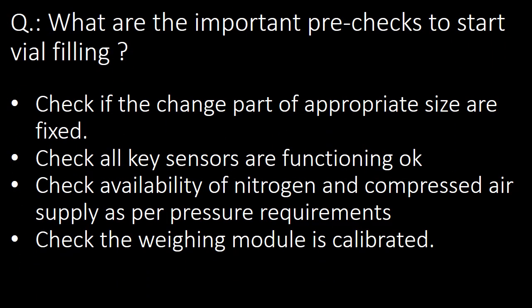Next question: what are the important pre-checks to start vial filling? Four important pre-checks are: first, check if change parts of appropriate size are fixed; second, check all key sensors are functioning; third, check availability of nitrogen and compressed air supply as per pressure requirements; and fourth, check that the weighing module is calibrated.